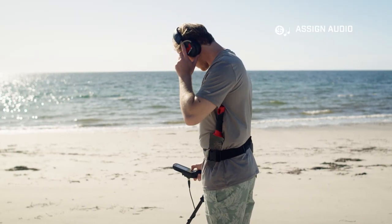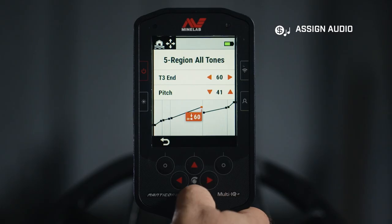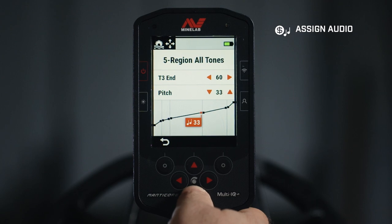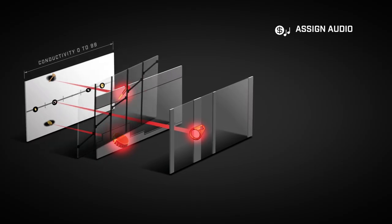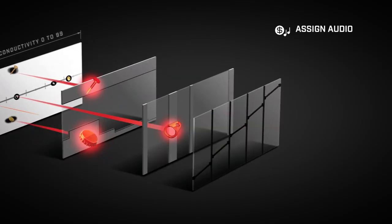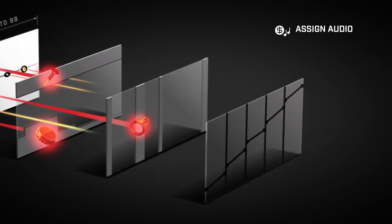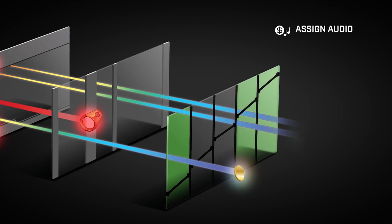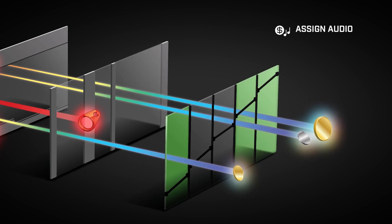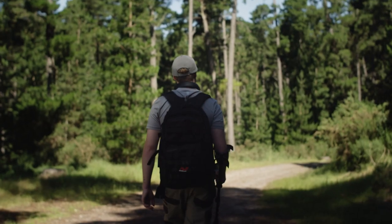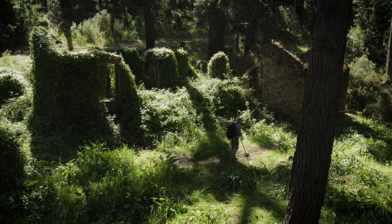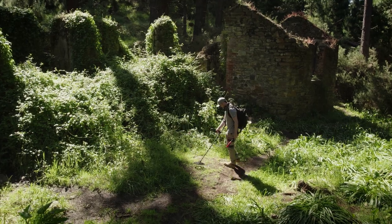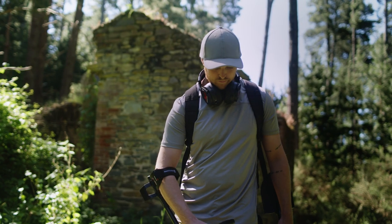Use pitch range and volume settings to make targets stand out or fade into the background. Take control of ferrous targets by changing the pitch and volume with a ferrous tone setting. Manticore lets you do it your way.